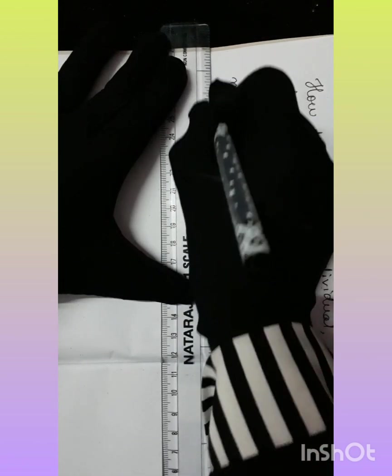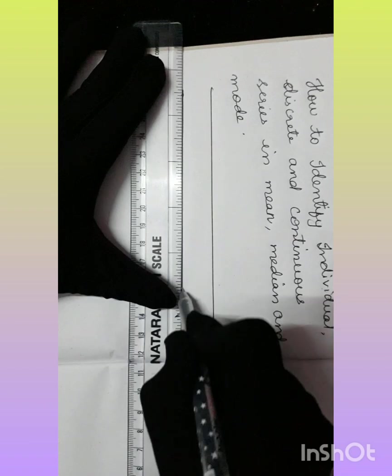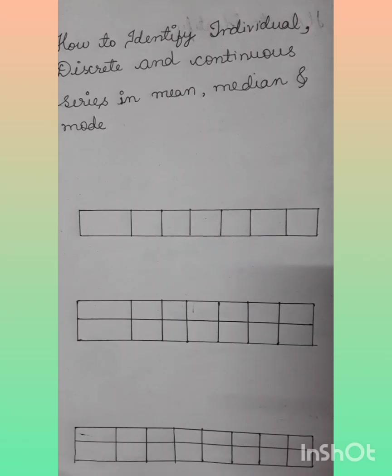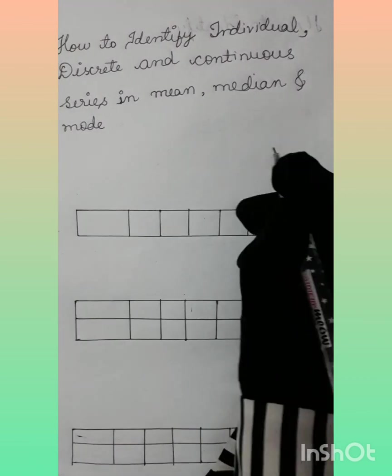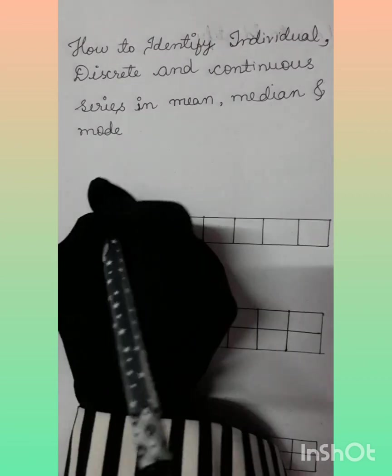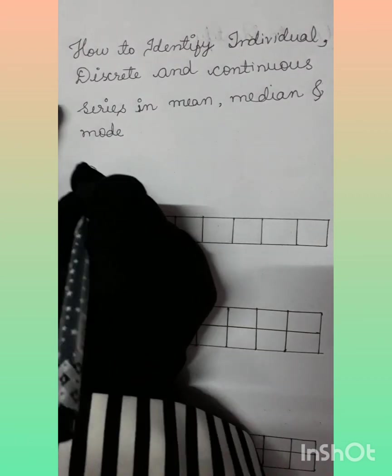This question is from statistics. When calculating mean, median, or mode, first we have to identify whether the question is individual, discrete, or continuous. Based on that, we can use the appropriate formulas and solve the questions.